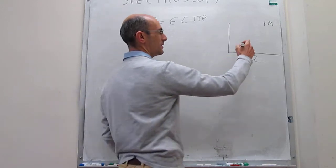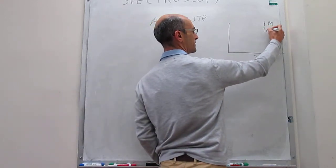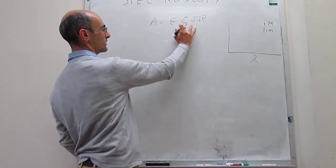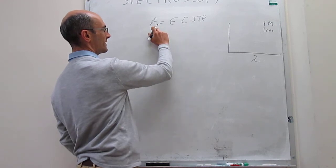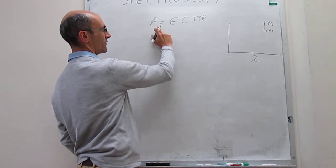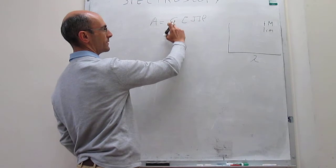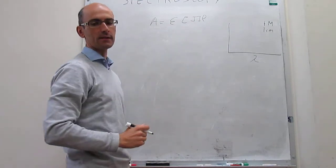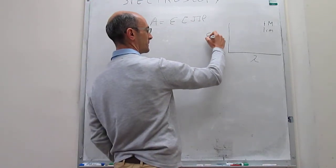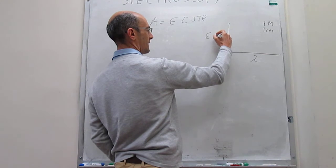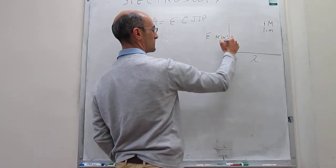That's a known concentration. And then if you have a path length of one centimeter, when you look at this expression, the absorbance that you get out of the experiment — if the concentration is one molar and the path length is one centimeter — would be exactly the molar extinction coefficient. This will be your epsilon, in units of molar to the minus one centimeter to the minus one.